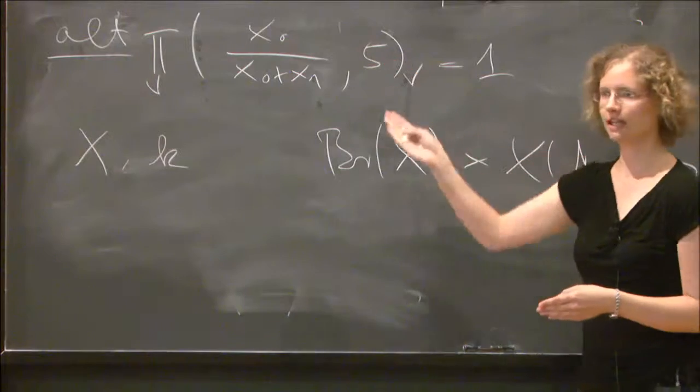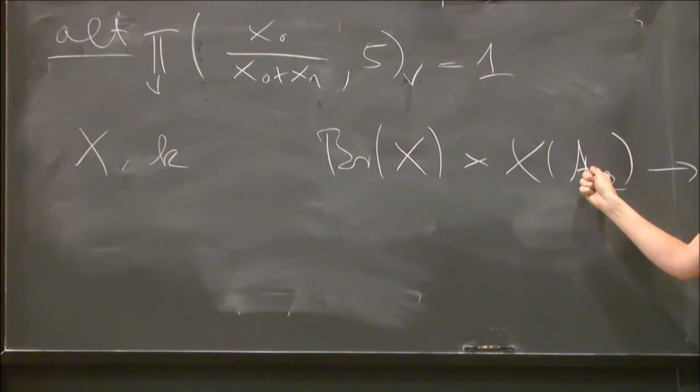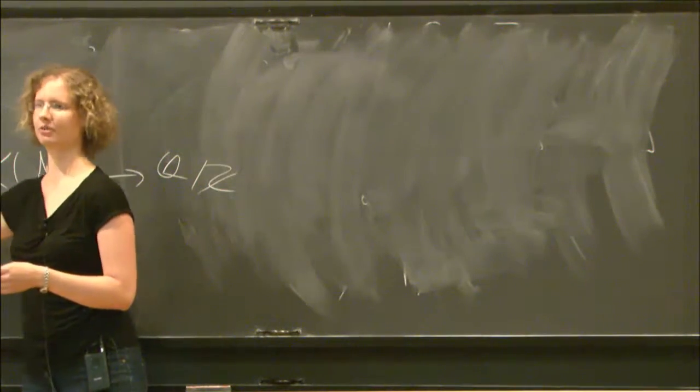By the reciprocity law, as we've seen in this example, if you take here a rational point, then it will map to zero under all elements of the Brauer group.